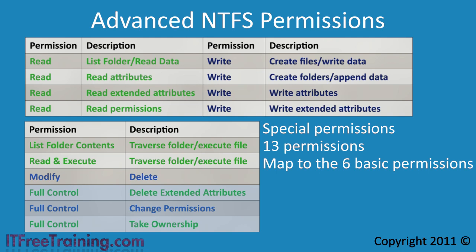The last of the basic permissions is full control, which adds three advanced permissions. The first adds the ability to delete extended attributes created by applications. The next is change permissions, which allows the user to change the NTFS permissions that have been assigned. The last advanced permission is take ownership, which allows a user to change the owner of a file or folder. The owner of a file or folder has the ability to change the NTFS permissions even if they do not have access to the file.